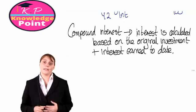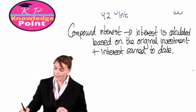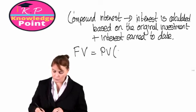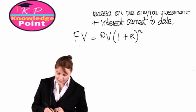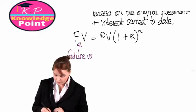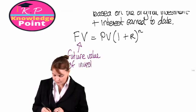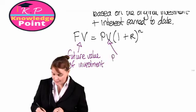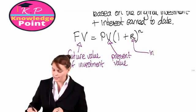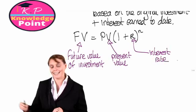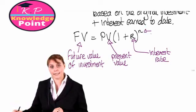Like we saw with simple interest, there is a formula for calculating the future value of an investment if compound interest is applied. The future value of an investment is equal to the present value, or the amount invested, multiplied by 1 plus r to the power of n, where FV is the future value, PV is the present value, r is the interest rate, and n is the number of time periods we are investing that amount for.